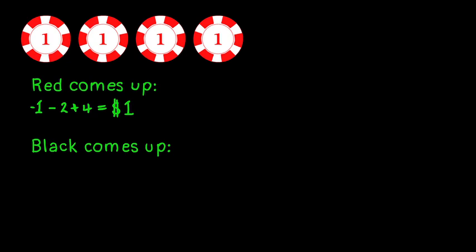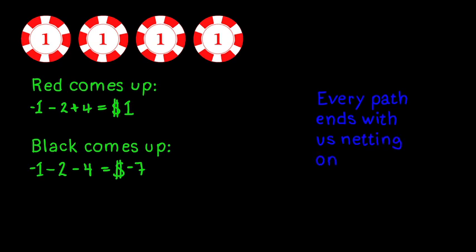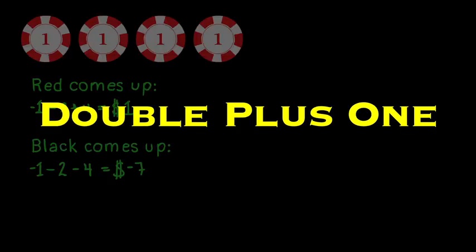Well, in this case, we're now down seven dollars, because we lost a dollar, and then two dollars, and then four dollars. So we continue like this. Notice every single path ends with us netting one dollar. Each time we double our previous bet, and we eventually win one dollar. That's why this strategy is called double plus one. You keep doubling your bet, and eventually you're plus one.